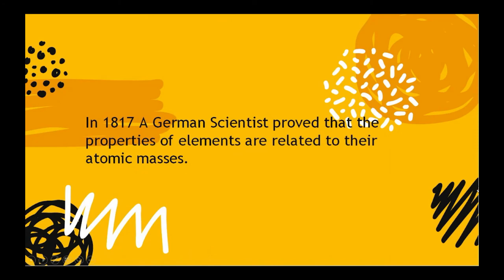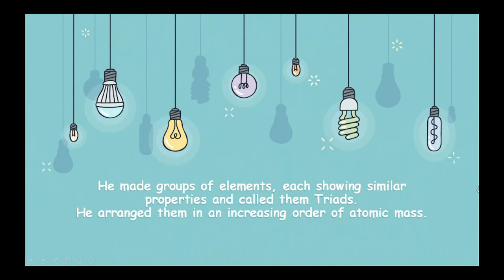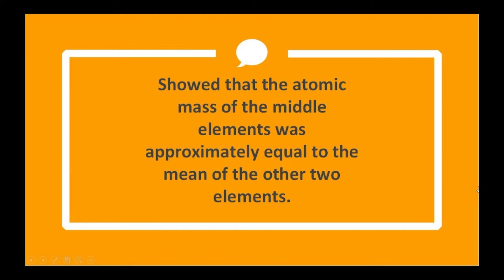He made groups of three elements each showing similar properties and called them triads. He arranged them in an increasing order of atomic mass and showed that the atomic mass of the middle element was approximately equal to the mean of the atomic masses of the other two elements.